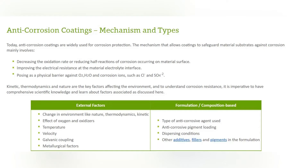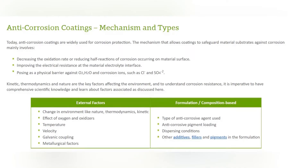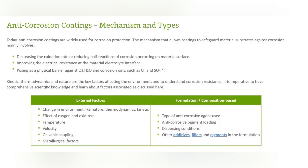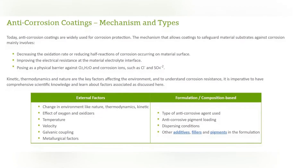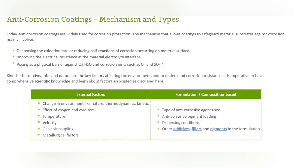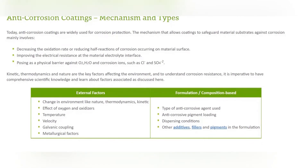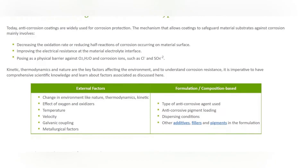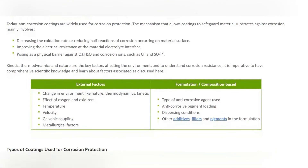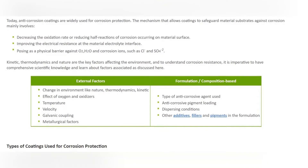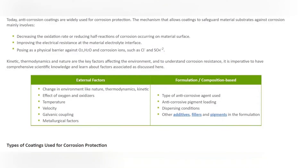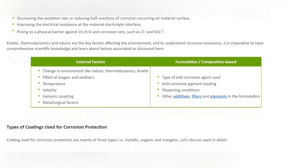Anti-corrosion coatings are widely used for corrosion protection today. The mechanisms that allow coatings to safeguard material surfaces against corrosion mainly involve decreasing the oxidation rate or reducing the half-reaction of corrosion that occurs on material surfaces, improving the electrical resistance at the material-electrolyte interface, and causing a physical barrier against O₂, H₂O, and corrosion ions such as chlorine and sulfate.